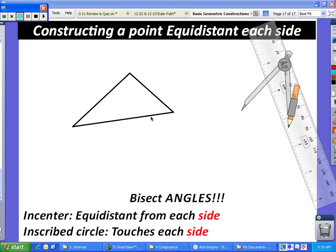All right, in this video we are going to be looking at how to construct a point equidistant from each side of a triangle. This is known as an inscribed circle, or the incenter of a triangle.